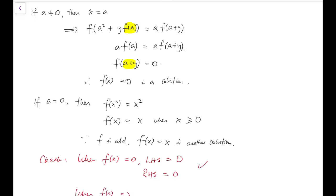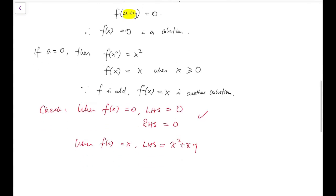When f of x is x, left hand side equals x squared plus x y, while right hand side equals x times x plus y, which is also x squared plus x y. So these two are indeed solutions. We are done.